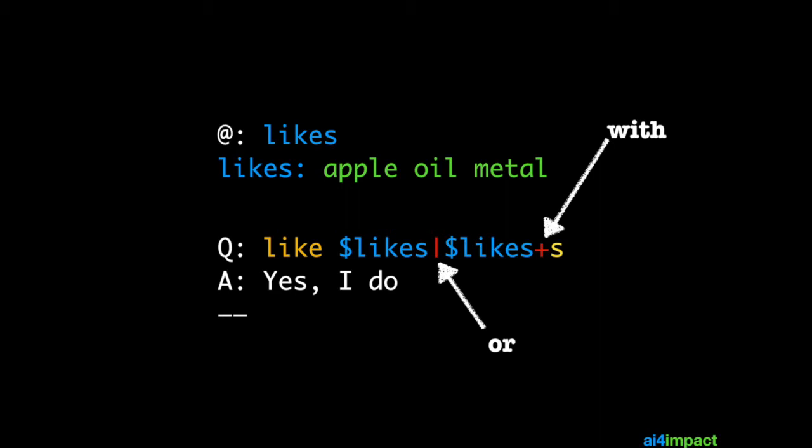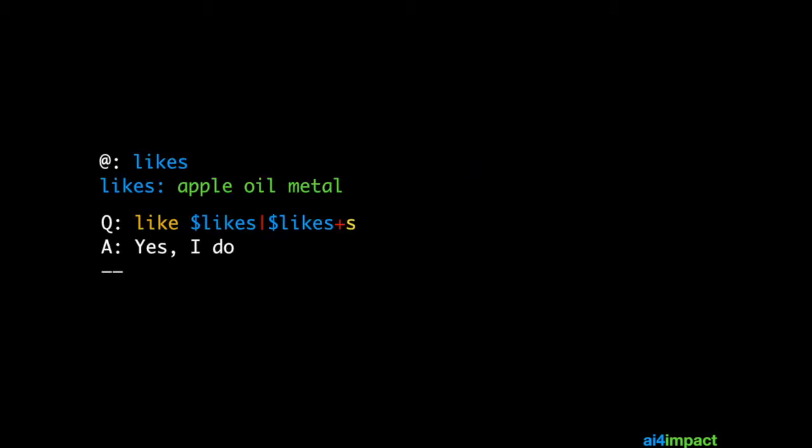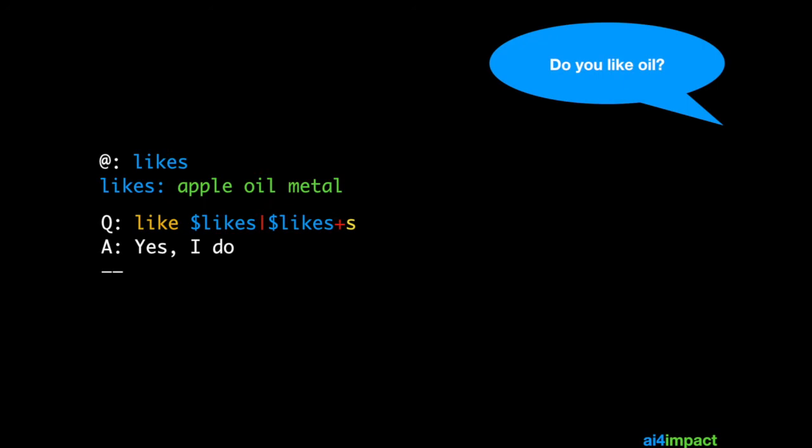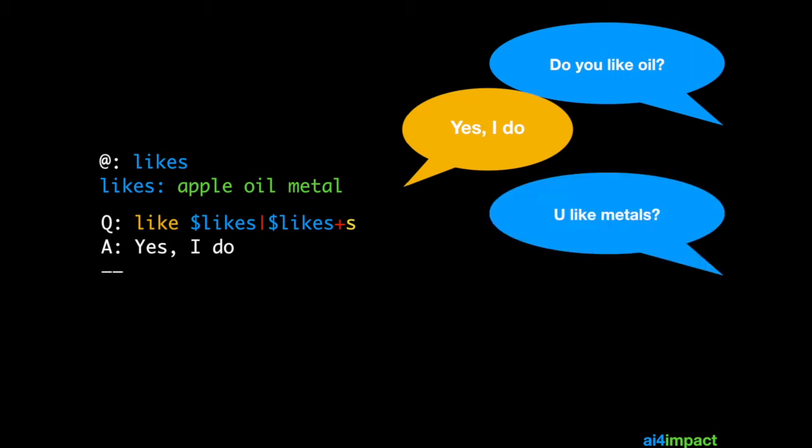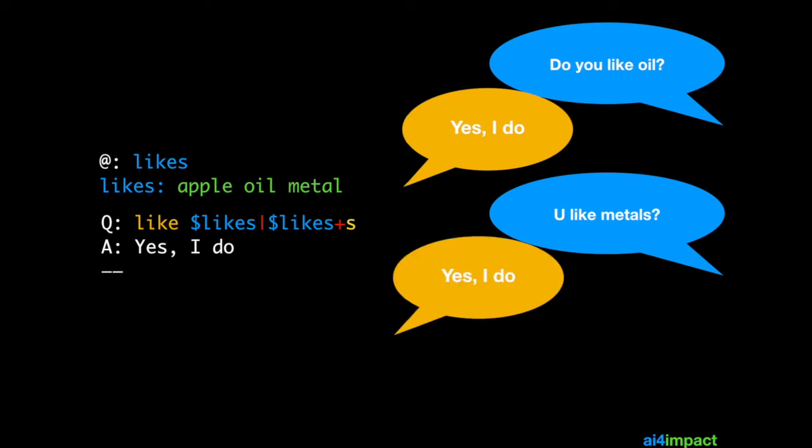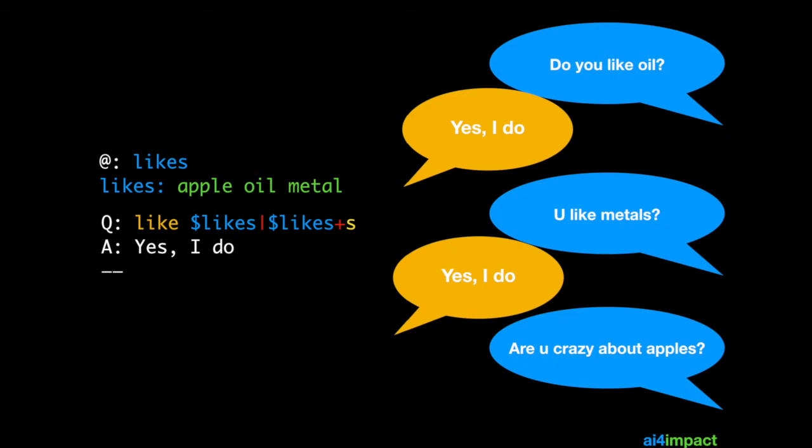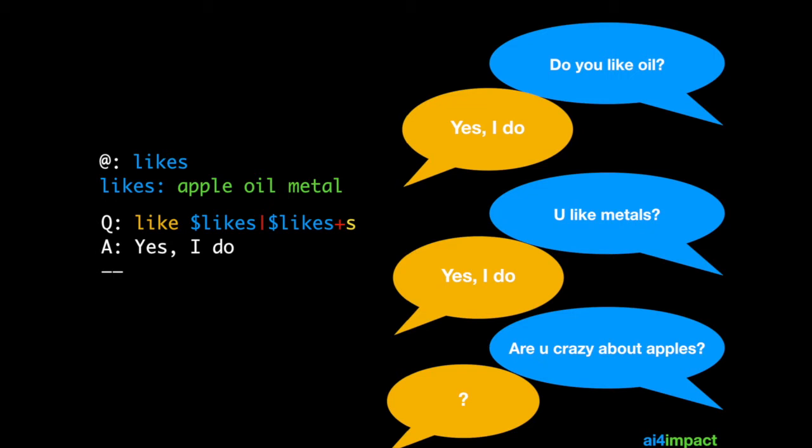Let's try it again. If the user asks do you like oil? The answer is yes I do because that's a singular form with a like and that works. You like metals? That's plural with a like and yes, that would match too. But if the user asks are you crazy about apples? That wouldn't match because the word preceding apples is not like. It's about.